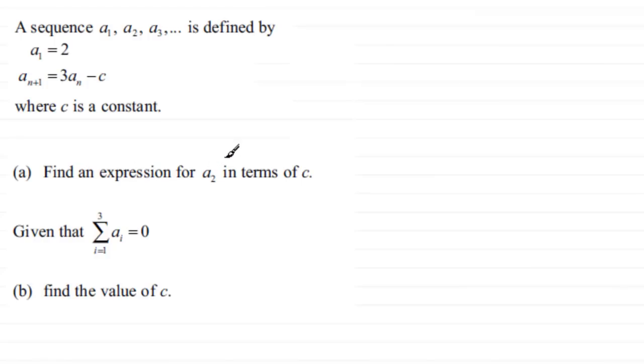for the second term a₂ in terms of the constant c. It's straightforward - let's do part (a). To get the second term a₂, all we do is set n equal to 1. So when n equals 1